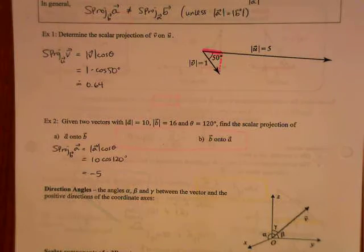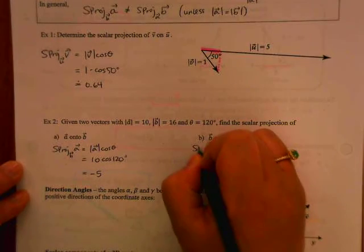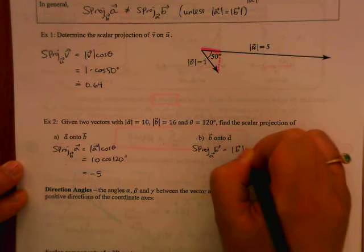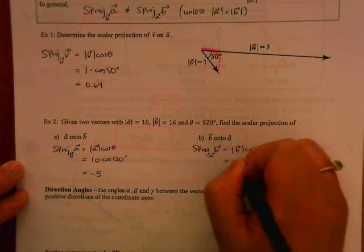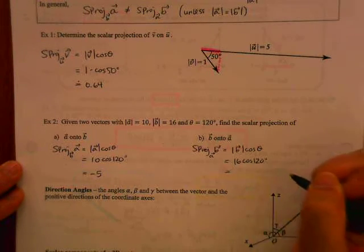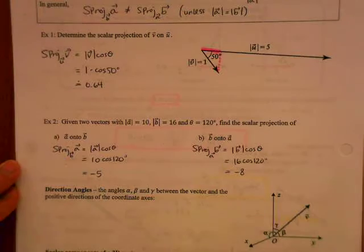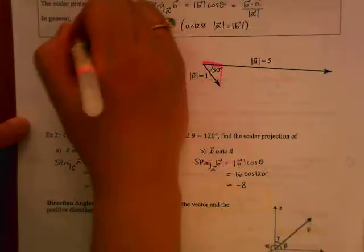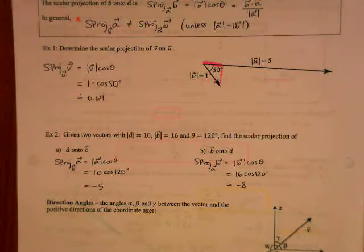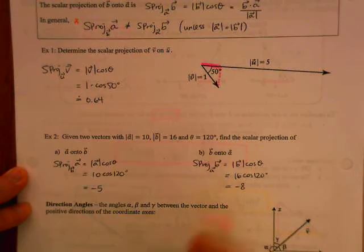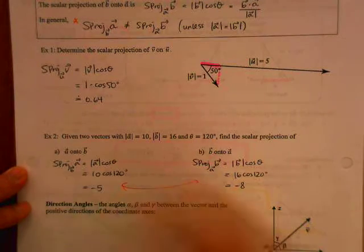And then scalar projection of B onto A is magnitude of B cos theta, so that's 16 cos 120, which is negative 8. And this just proves the result up here, that scalar projection of A onto B is not equal to scalar projection of B onto A.